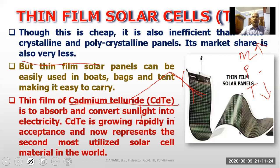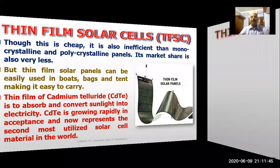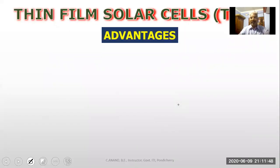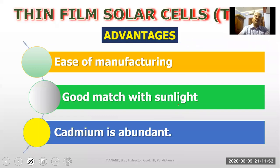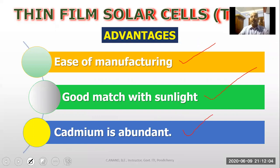CdTe is used to absorb and convert sunlight into electricity. CdTe is growing rapidly in acceptance and now represents the second most utilized solar cell material in the world. The advantages of cadmium telluride thin film include ease of manufacturing, good match with sunlight, and the fact that cadmium is abundant, making it cheap.